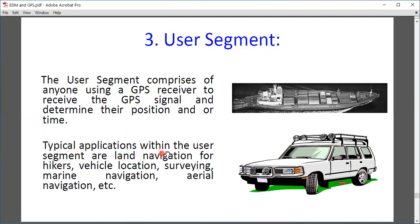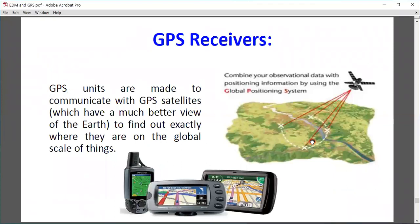User segment: The user segment comprises anyone using a GPS receiver to receive GPS signals and determine their position over time. Typically, applications within the user segment are land navigation, hikers, vehicle location, surveying, marine navigation, and aerial navigation. In the user segment, you can use GPS in mobile devices or for any purpose.